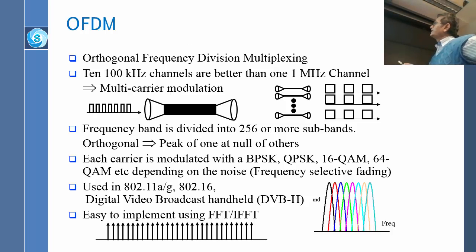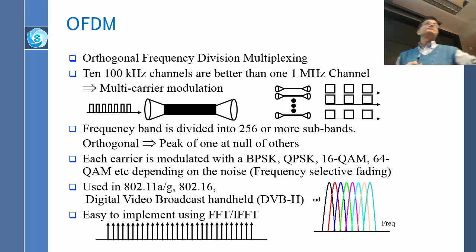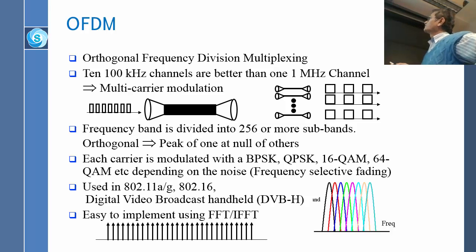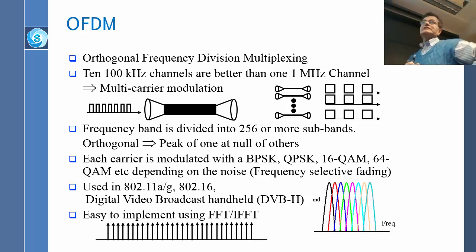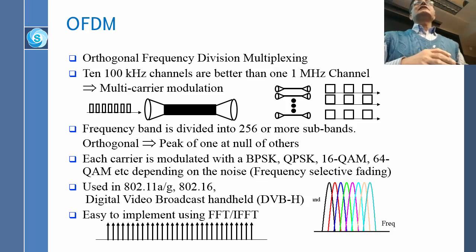What you do is take the band, divide it into small pieces, and make sure that the power spectrum is such that each channel is running at its maximum. When it is running at its maximum, the other channels are running at their minimum, so there is least interference. The channels will overflow and there will be some power from other channels, but this is what the orthogonal part means — orthogonal means perpendicular, you do not affect each other.